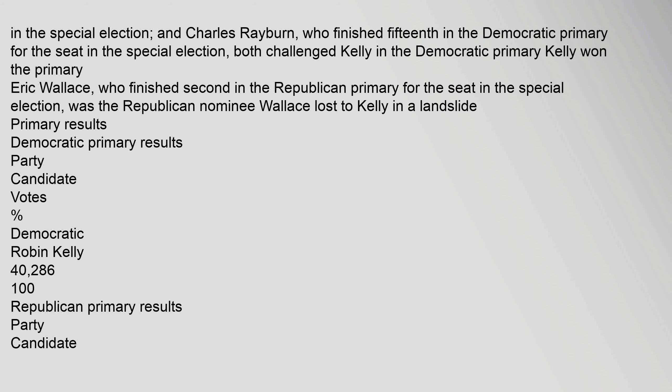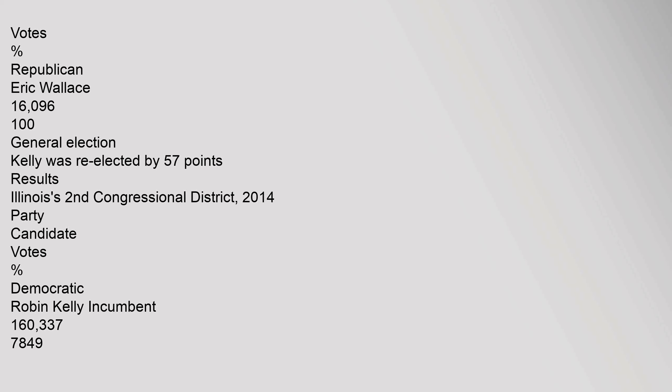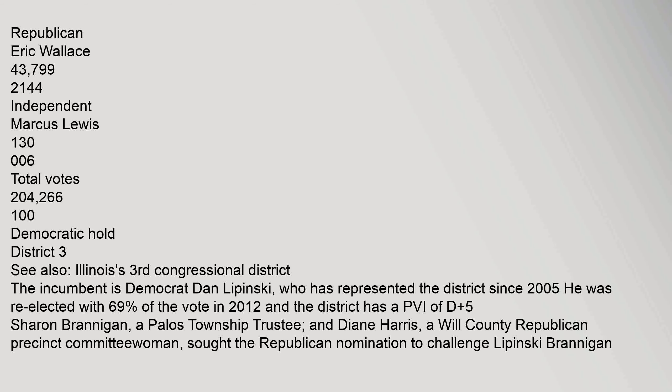Eric Wallace, who finished 2nd in the Republican primary for the seat in the special election, was the Republican nominee. Wallace lost to Kelly in a landslide. Democratic primary: Robin Kelly – 40,286 votes, 100%. Republican primary: Eric Wallace – 16,096 votes, 100%. General election: Kelly was re-elected by 57 points. Results: Robin Kelly (D) 160,337; Eric Wallace (R) 43,799; Marcus Lewis (I) 130,006; Total votes 204,266. Democratic hold.